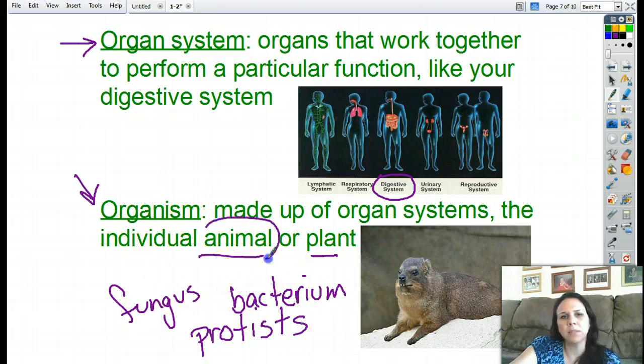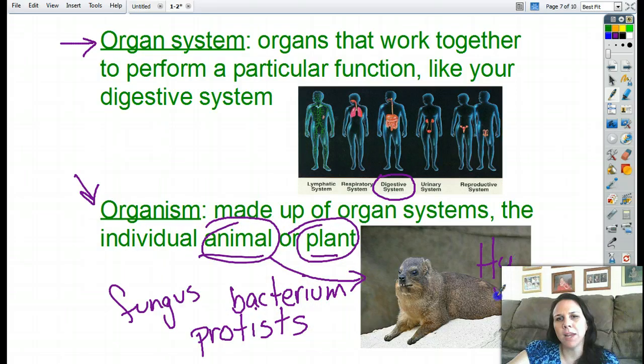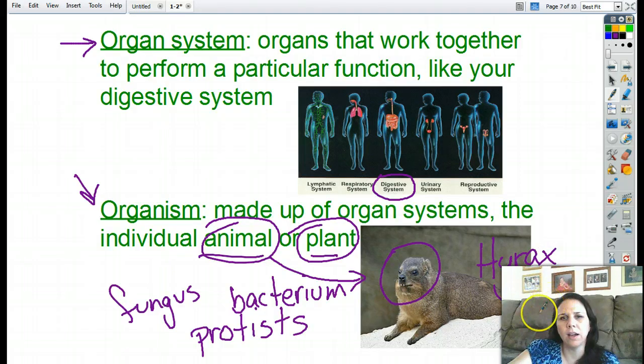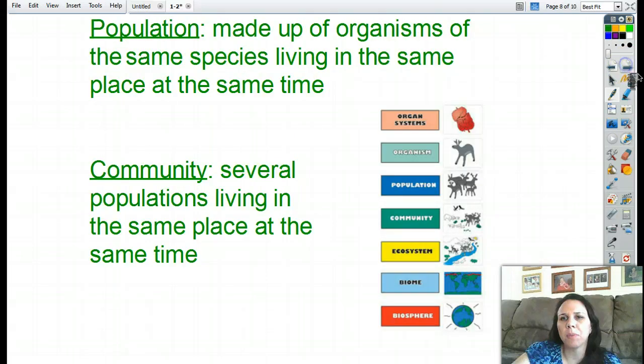In biology, we typically deal with plants and animals most often. Animals like this lovely guy right there. It's called a hyrax. I love this guy because look closely at his front teeth. He's got buck teeth. I think he's cute. Okay, so now I've got the individual animal or human or whatever. Well, what happens if I put a whole bunch of those guys together? I get a population.